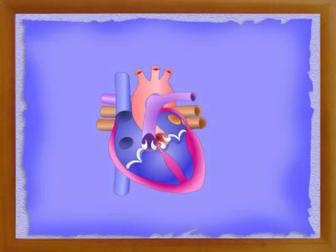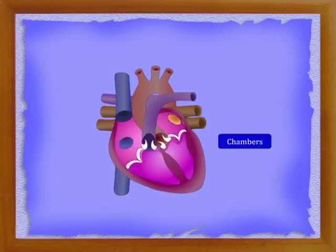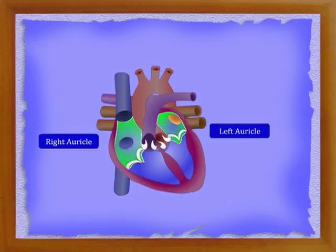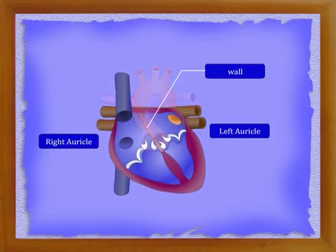As you are seeing in the picture, the heart consists of four chambers. The two chambers present in the upper part are called oracles or atria. They are the right and the left oracles. The right oracle is larger than the left oracle. The walls of the oracles are thin. A muscular partition wall separates the right and left oracles. There is no connection between the two oracles.